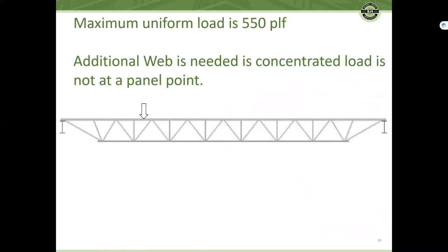Two last things to remember. The maximum allowable uniform load for a KCS joist is 550 PLF. And even though the cords and webs are bigger, if a concentrated load is not at a panel point, additional web members are required.